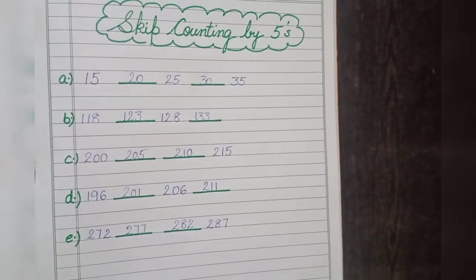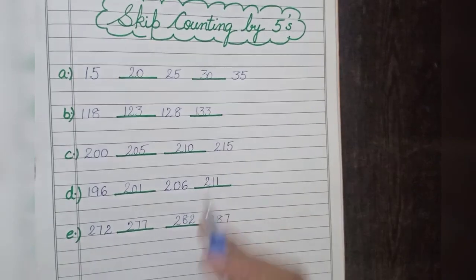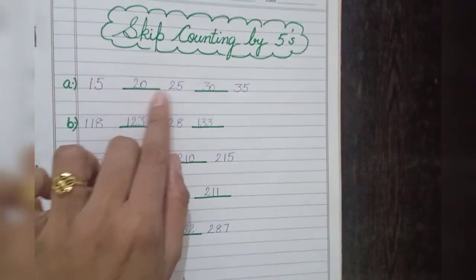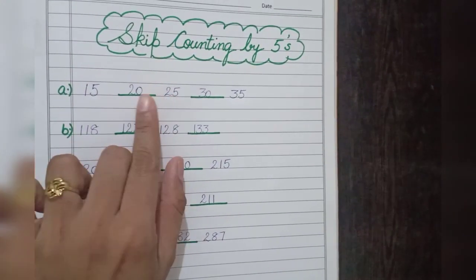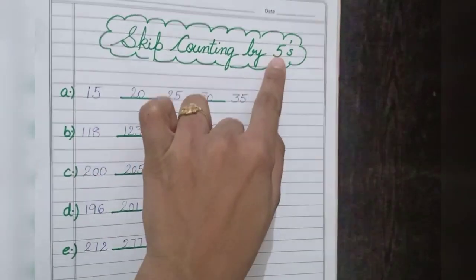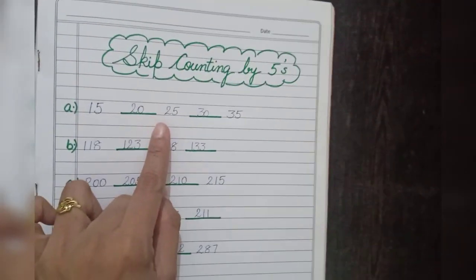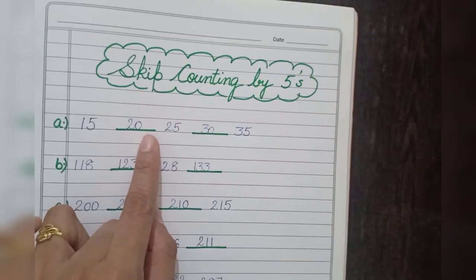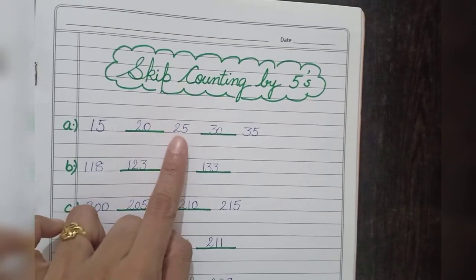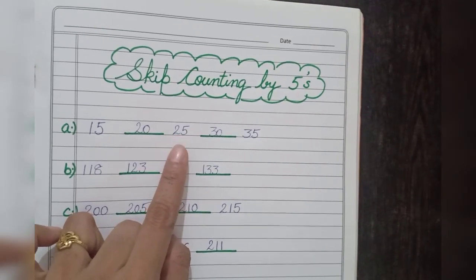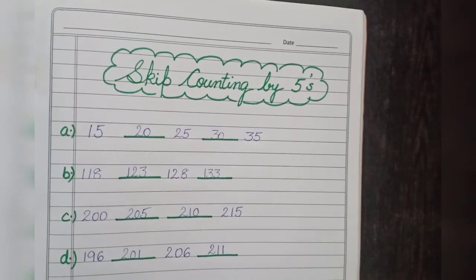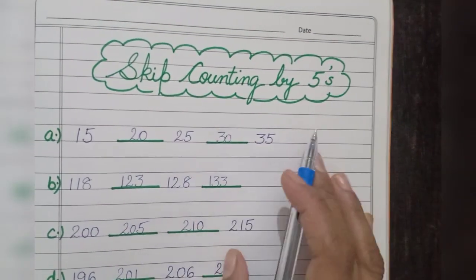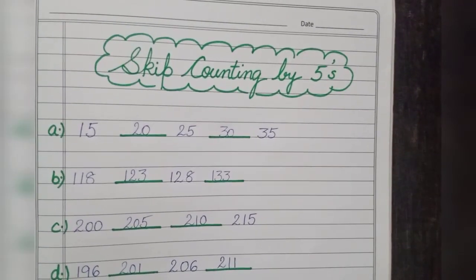So children, whenever you will be doing skip counting by 5s or 2s, make sure in between, whenever you are getting the number, if you add 5 more to it, you will get the answer. Then you can check this one is also right. In case of 2 also, you can check if it comes the same, then you are doing it correct. So this way you can do skip counting of 5 correctly. Thank you so much.